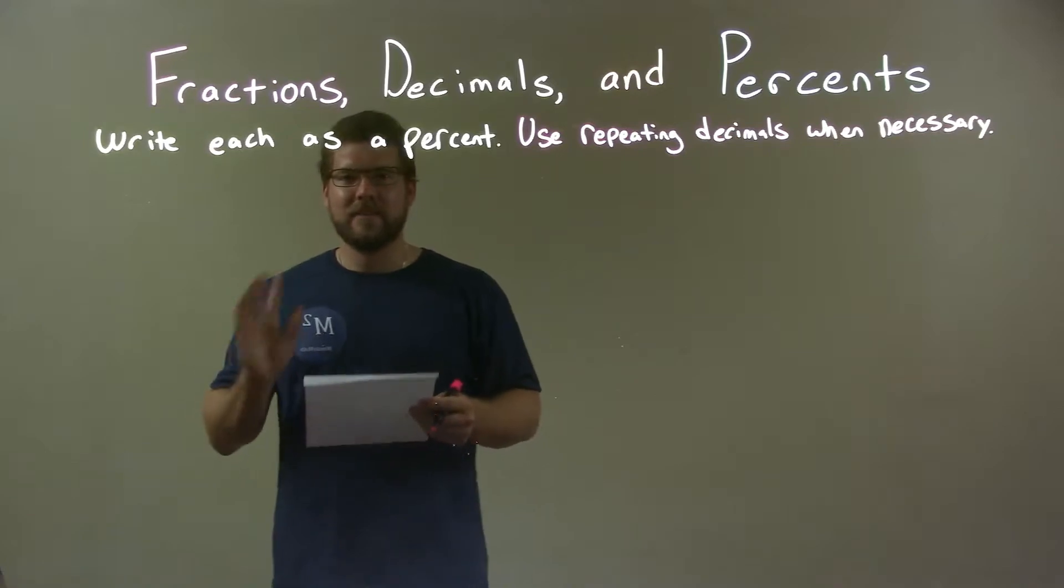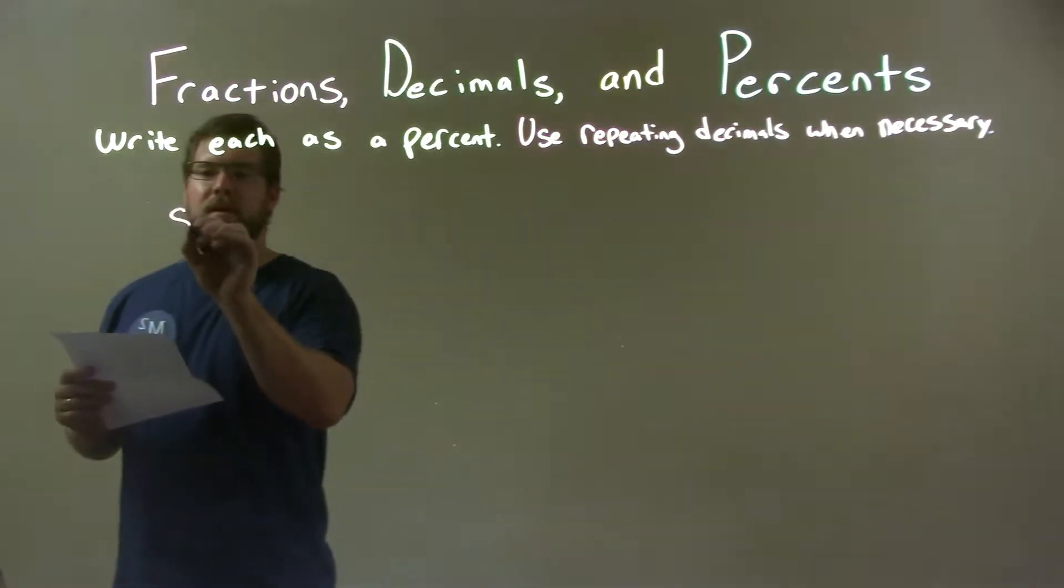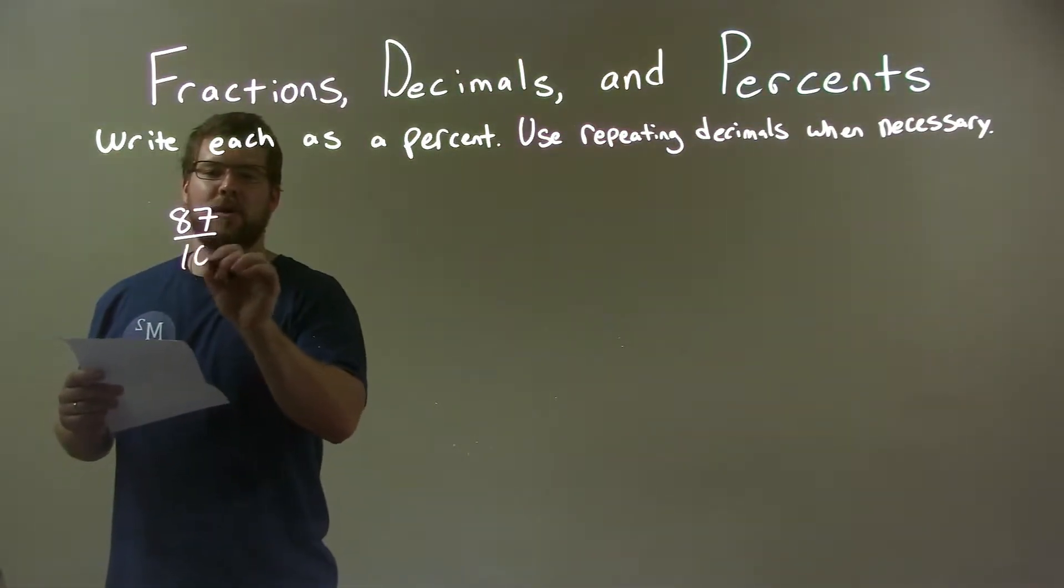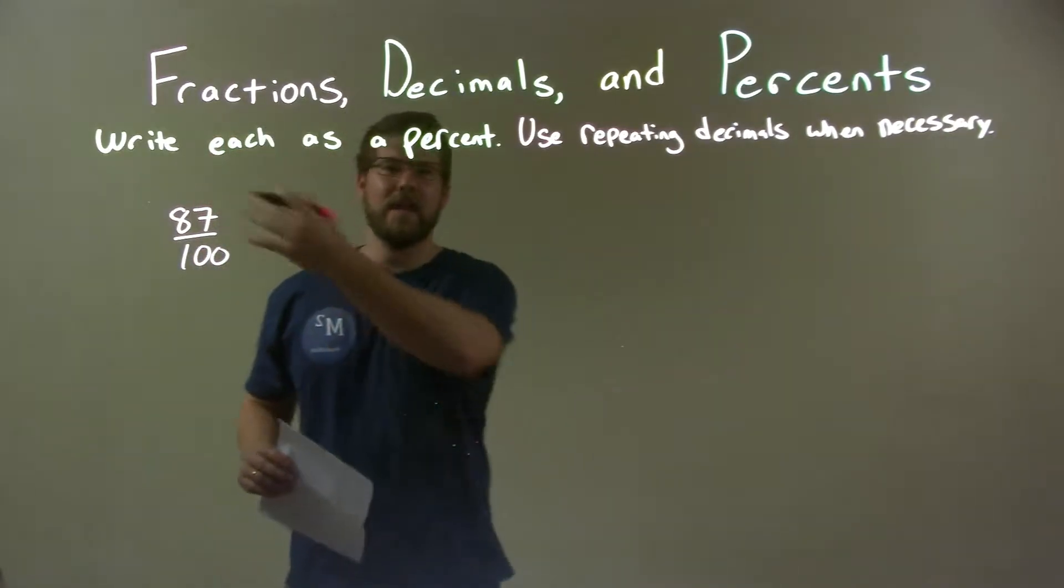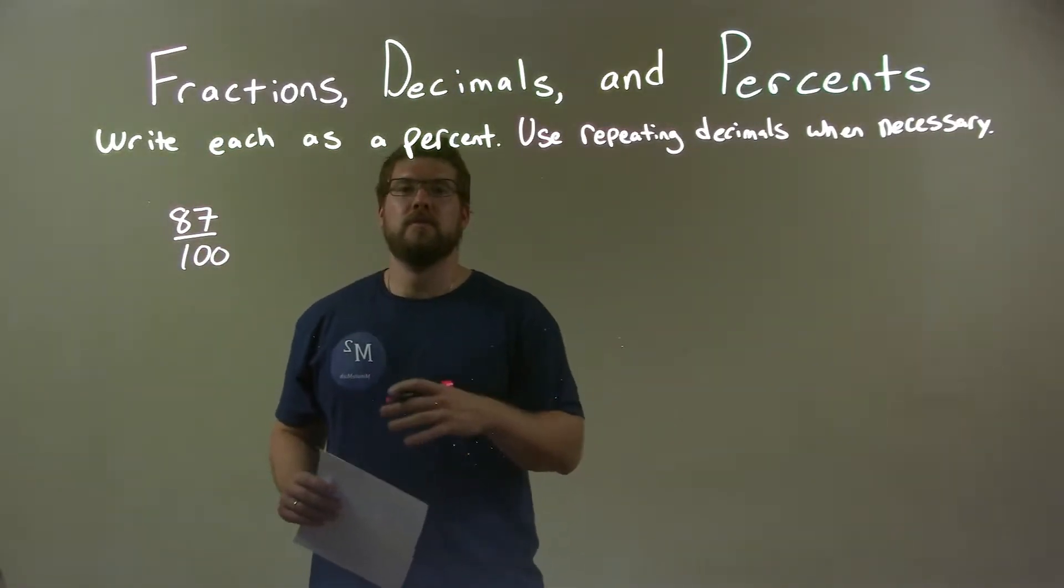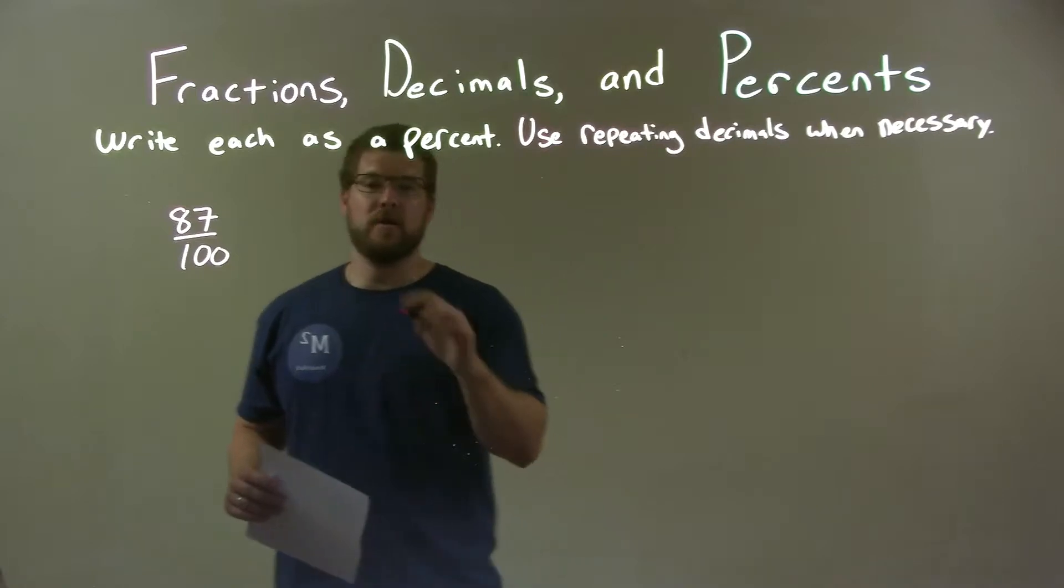If I was given this fraction 87 over 100, I have 87 over 100. Well, first thing I want to do is write that as a decimal. So I do long division.